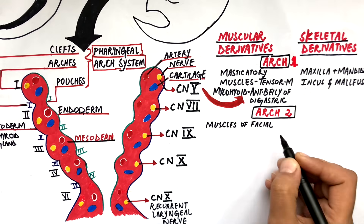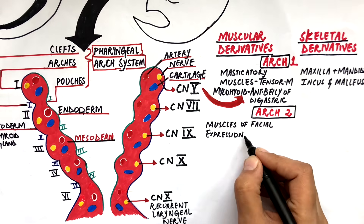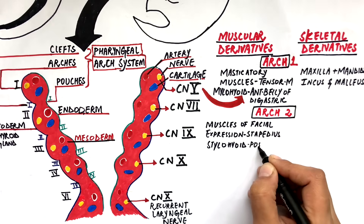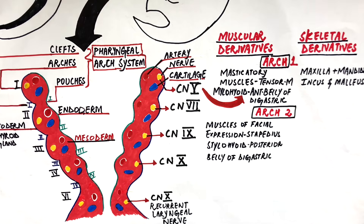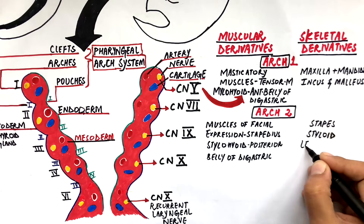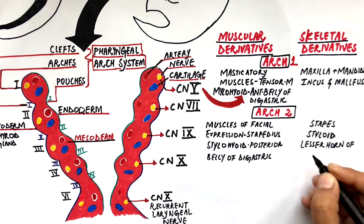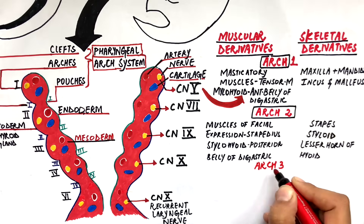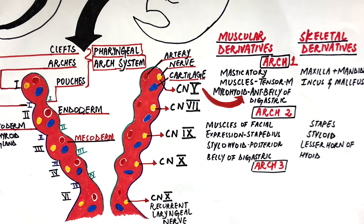The muscular derivatives of the second arch are the muscles of facial expression, the stapedius, stylohyoid and the posterior belly of the digastric muscle. The skeletal derivatives of the second arch are the stapes, the styloid process of the temporal bone and the lesser horn of the hyoid bone. The muscles of the second arch are innervated by the facial nerve.